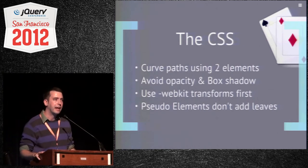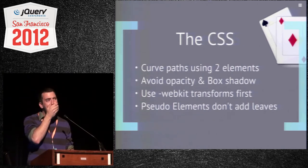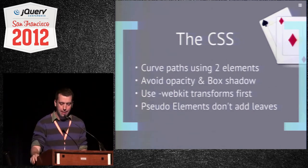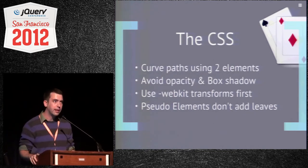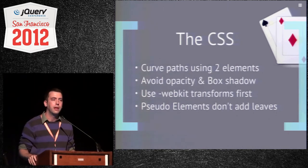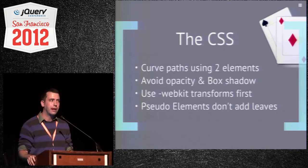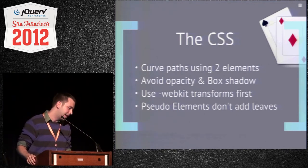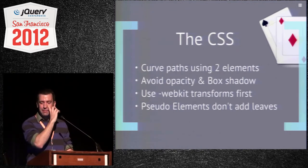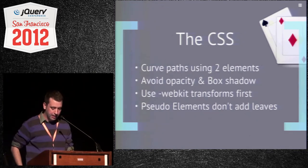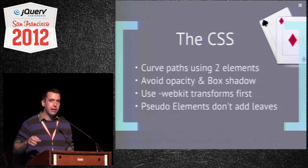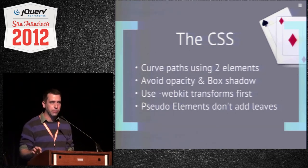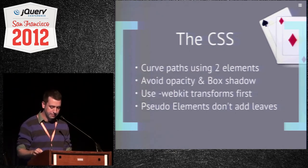Some bad points: opacity and box shadow. For whatever reason, all of the iPad versions are really bad at those. You can shrink things down to nothing, move them fast around the screen, spin them in 3D space — but if you try to make something slightly see-through, you can't. Don't do that. Same thing with box shadow — you can have it on the page, just don't animate anything with it, and don't animate anything over it, because it's the same opacity problem.